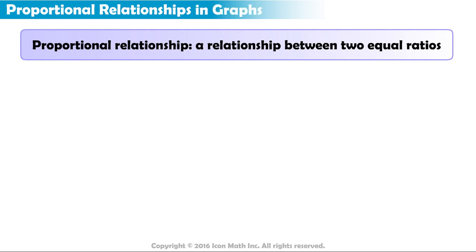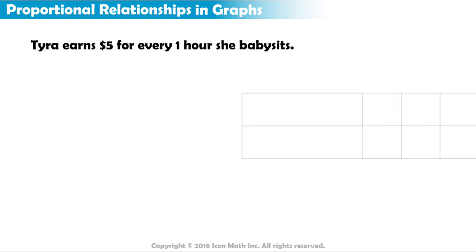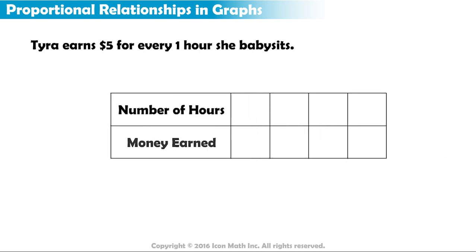Let's take an example. Tyra earns $5 for every one hour she babysits. This table represents how much money she would earn babysitting for 1, 2, 3, and 4 hours.